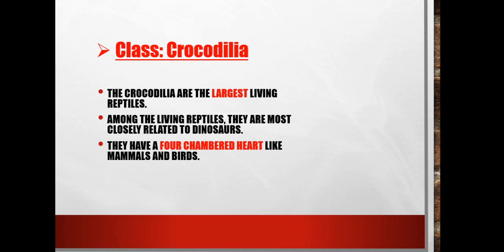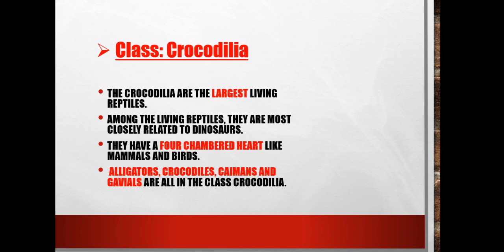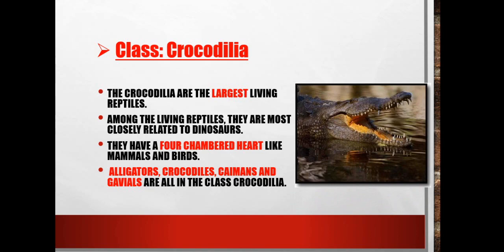They have a four-chambered heart, like mammals and birds. Alligators, Crocodiles, Caimans, and Gharials are all in the order Crocodylia.